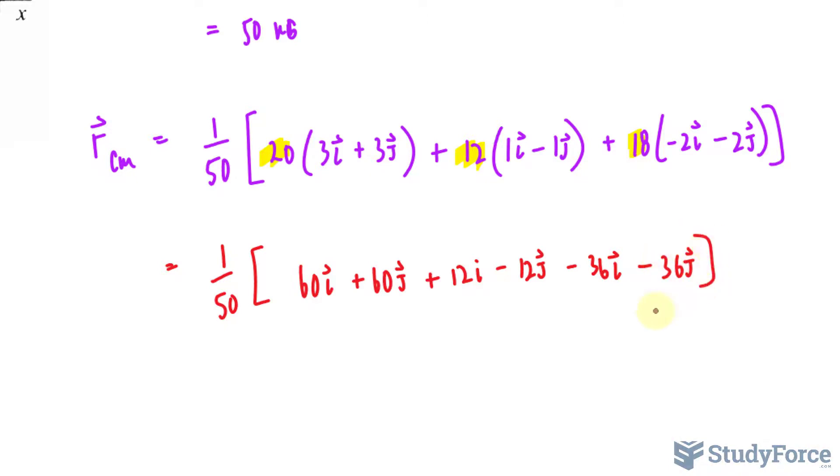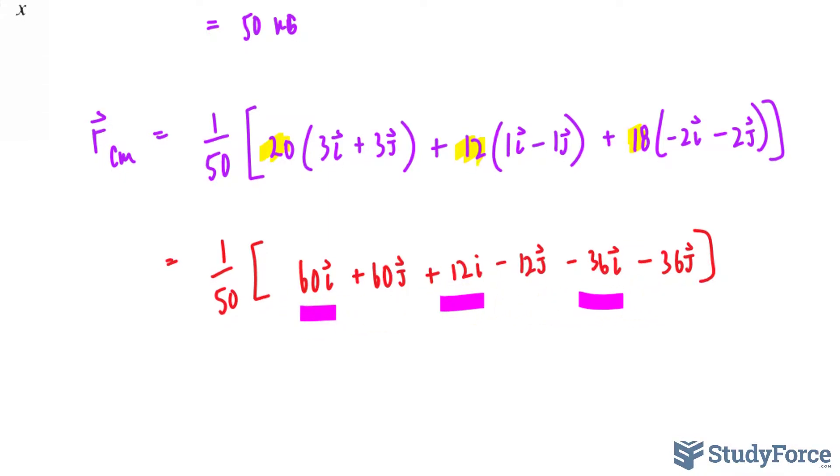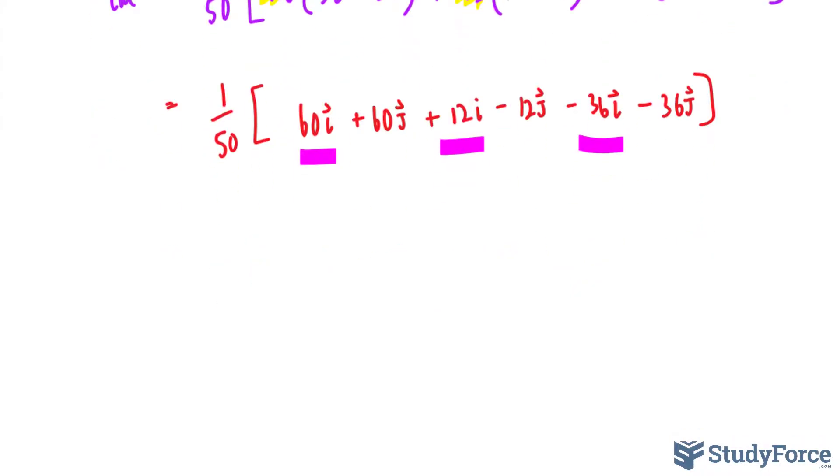We will combine these like we combine like terms, so this one, that, and that will be combined together. 60 plus 12 makes 72, and 72 minus 36 is 36, so 36i. 60 minus 12 makes 48, minus 36 is 12. So positive 12j.